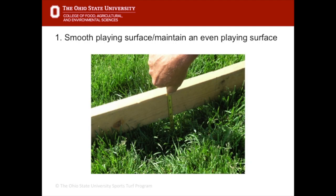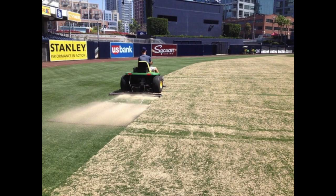There are several reasons why top dressing is an important part of any turfgrass management program. First, top dressing material is used to maintain a consistent, smooth playing surface so that there are no ruts and holes that can adversely affect player safety or the quality of the game. The material is applied and dragged or brushed across the turf to make sure that any holes or depressions are filled.